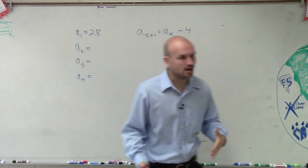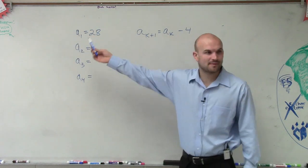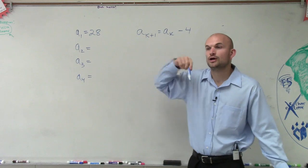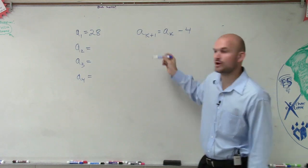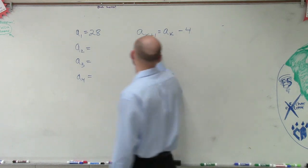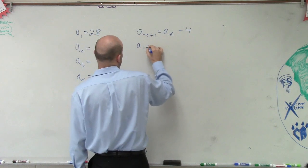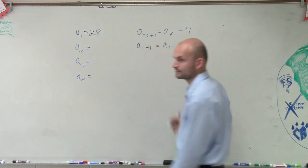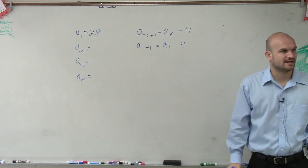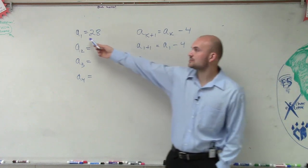So if we know A sub 1, 1 can represent our k. Remember, recursive form, we're going to be plugging in our previous term into there. So let's plug in A sub 1. Let's plug in 1 in for here. So this would be A sub 1 plus 1 equals A sub 1 minus 4. You guys see what I did? I plugged the 1 in for the k because we know A sub 1.